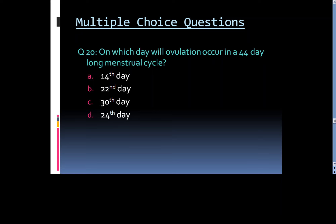Question 20: On which day will ovulation occur in a 44-day-long menstrual cycle? Option A. Fourteenth day, Option B. Twenty-second day, Option C. Thirtieth day, or Option D. Twenty-fourth day.